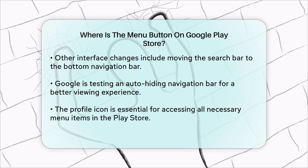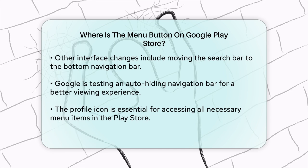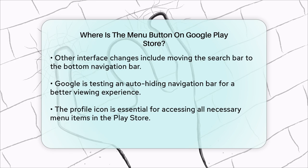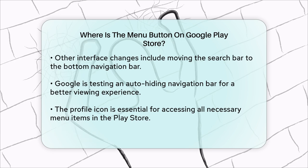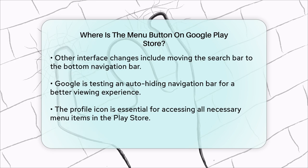Additionally, Google has been making other tweaks to the Play Store interface. For instance, the search bar has been moved to the bottom navigation bar, and there are even tests for an auto-hiding navigation bar to give you more space to view apps and games. But for now, the profile icon is your key to accessing all the menu items you need.